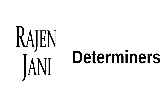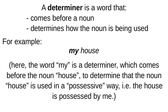Today we talk about determiners. A determiner is a word that comes before a noun to determine how the noun is being used. For example, 'my house.' Here, the word 'my' is a determiner. It comes before the noun 'house' and determines that it is used in a possessive way. Whose house? My house. So 'my' is a possessive determiner.